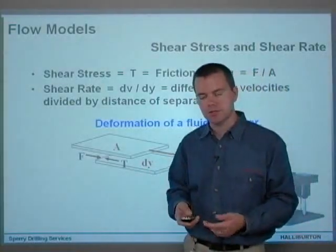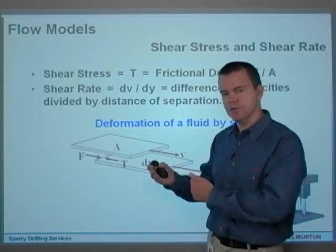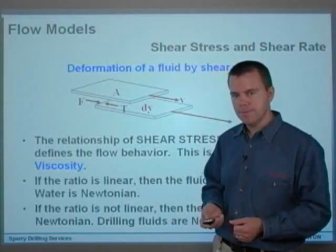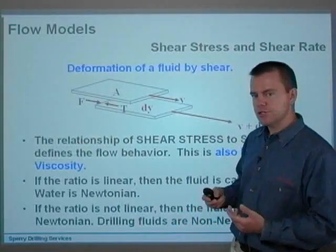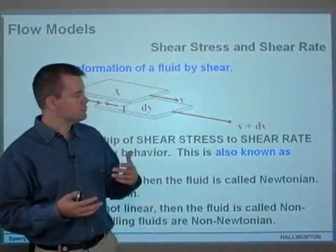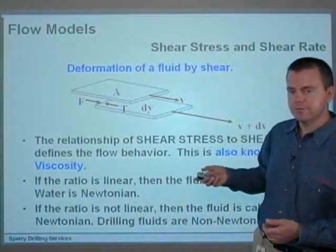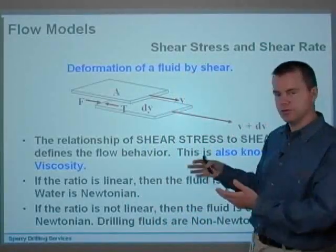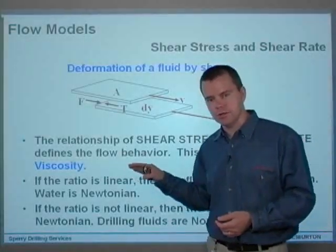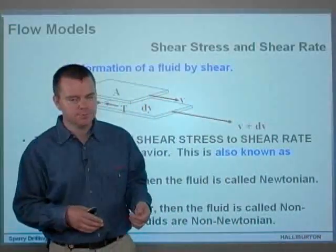If you divide the difference in velocities between the two plates by the distance of separation dy, that gives you the shear rate. Velocity divided by distance gives you a per-unit-time value, and that's the units of shear rate. The relationship of shear stress to shear rate defines the flow behavior and is also known as viscosity. If the ratio is linear, then the fluid is called Newtonian — water is a Newtonian fluid, as is glycol.